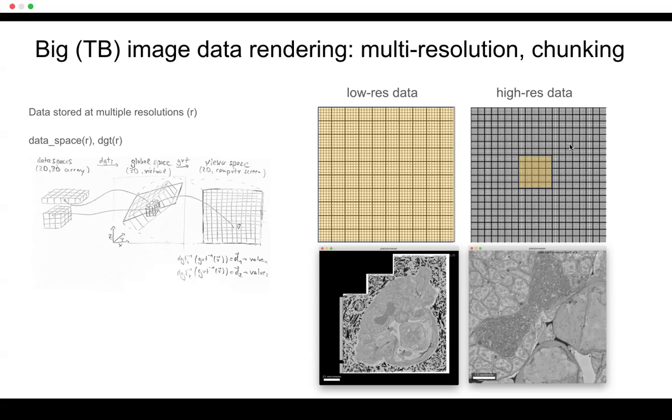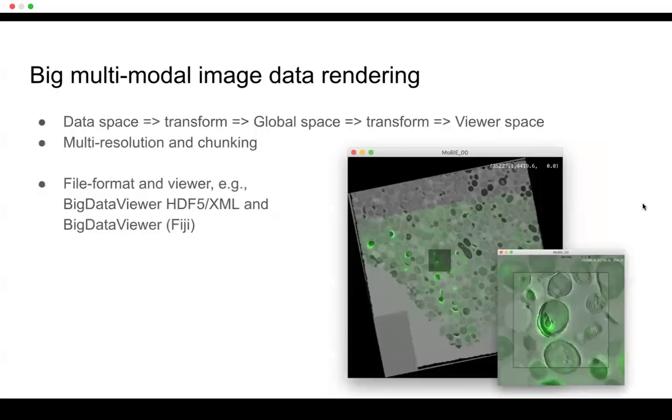So for example, if you have your data saved in TIFF file format, this is typically not possible because then the whole plane would be laid out in disk in a way that you cannot computationally efficiently only load such a subset. So you need other file formats for this chunking. All right, so to do big multimodal image data rendering you need these two things I would say. So you need this concept of transformation from your data space to a global space and you need multi-resolution and chunking. And now you need an ecosystem where you have a file format and a viewer that support all of those and that play well along together.